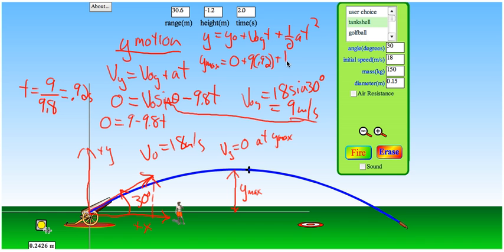And then the acceleration, don't forget if I made up positive, the acceleration is negative 9.8. 0.92 squared. And so y maximum for this problem is 4.13 meters.